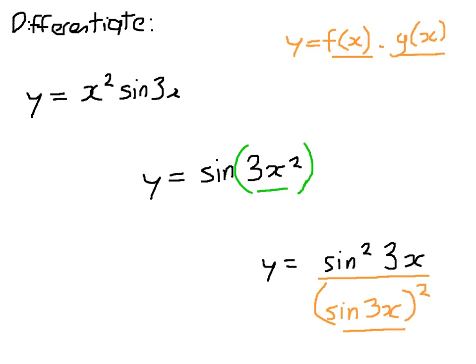Which, of course, leaves me with this at the top. We have x squared, completely separately, and that is multiplied by sine 3x. We have two separate functions multiplied together, so we can use the product rule on that.